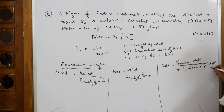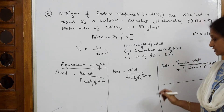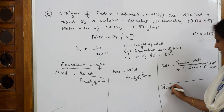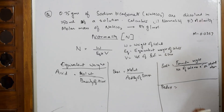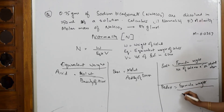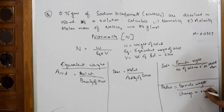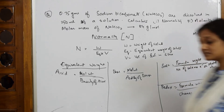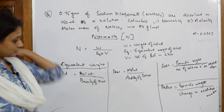For a redox reaction, the formula for equivalent weight is: formula weight divided by change in oxidation number. So there are different formulas depending on the type of compound — but it is actually straightforward.